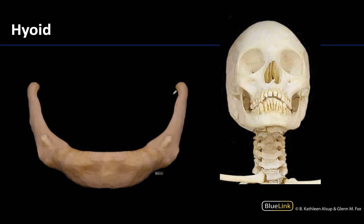The hyoid bone — we talked about the infrahyoid muscles in this session, so all those muscles are going to be inferior to the hyoid bone. You can see it right in this region here, and it is what's referred to as a free-floating bone. It looks like it's sitting kind of right on top of the vertebral column, but importantly it's not part of the vertebral column. It looks kind of like this wing-shaped bone, and it does not directly articulate with any other bone. It will have some ligaments and muscles attached to it and is associated with the anterior neck region.